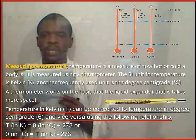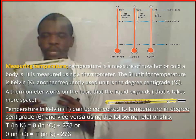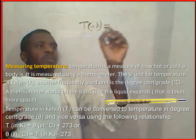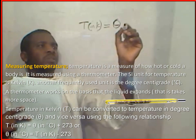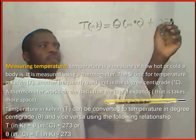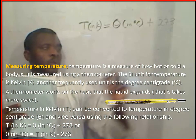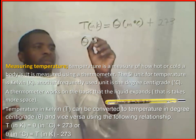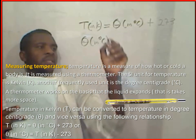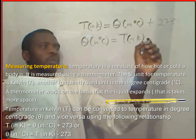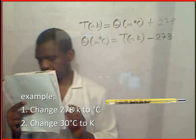Temperature in Kelvin can be converted into temperature in degree centigrade using the following relationships. Temperature in Kelvin is equal to temperature in degree centigrade plus 273. Temperature in degree centigrade is equal to temperature in Kelvin minus 273.